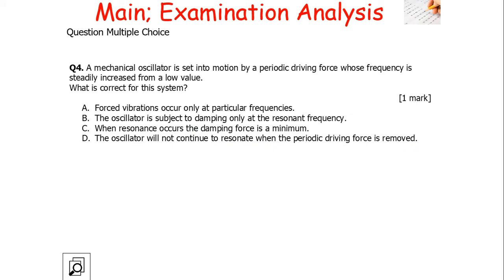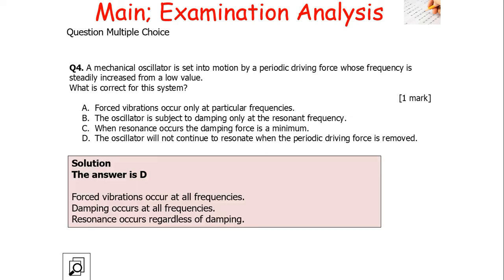Question 4: a mechanical oscillator is set into motion by a periodic driving force whose frequency is steadily increased from a low value. The answer is D: forced vibrations occur at all frequencies, not particular ones. Damping occurs at all frequencies. Resonance occurs regardless of damping, so it doesn't only occur at minimum damping. The oscillator will not continue to resonate when the driving force is removed, because resonance can only occur when the driving frequency equals the natural frequency.